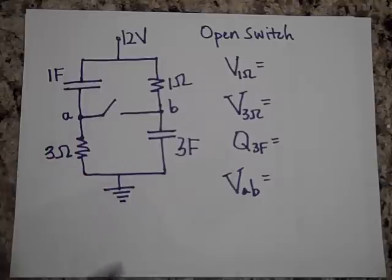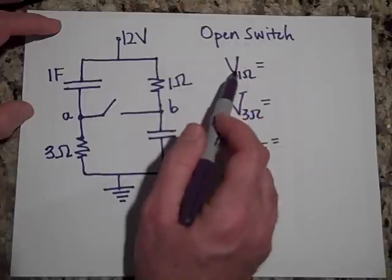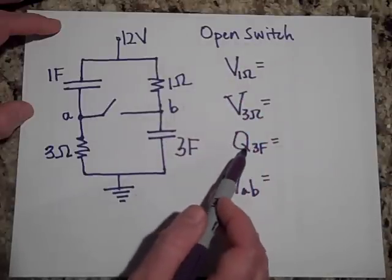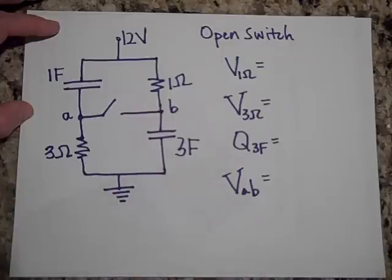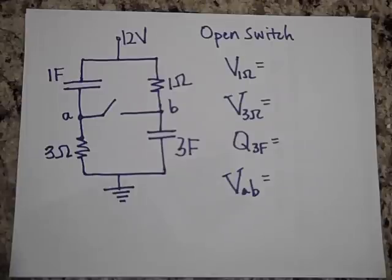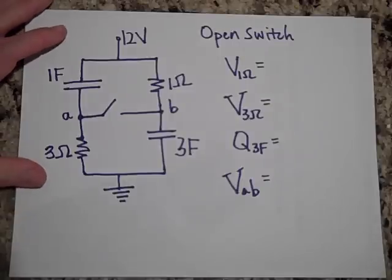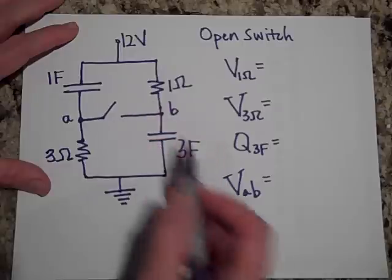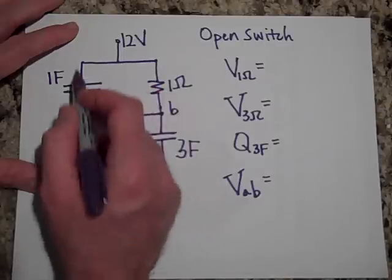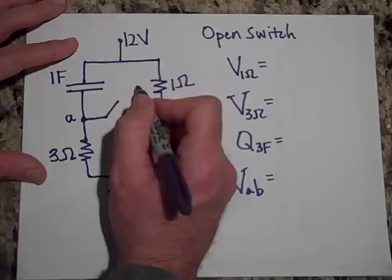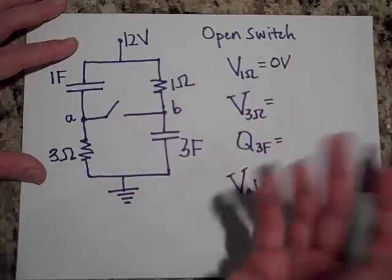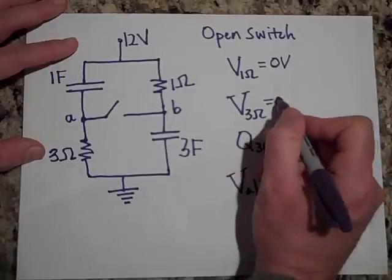All right, so the switch is open, and the question is, what will be, when the switch is open, the voltage on the 1 ohm, the 3 ohm, across the 1 ohm resistor, the 3 ohm resistor, and what will be the charge on the 3 farad capacitor, and what will be the voltage at A with respect to B? All right, so let's see. You should try this. Go ahead and try this, pause it, and I'll see you in a little bit. Okay, we're back. Okay, now current doesn't flow here. Can't flow this way. It's blocked. Can't flow this way. There's no current. And if there's no current, then I know the voltage across this one is 0 volts. Because there's no current. And the voltage across the 3 ohm is 0 volts, because there's no current.